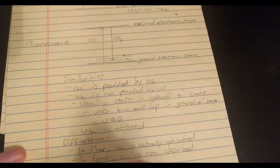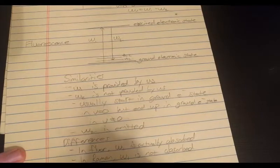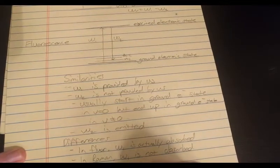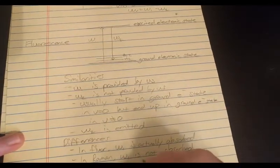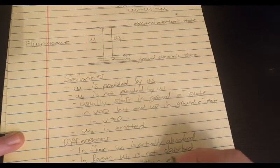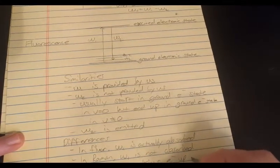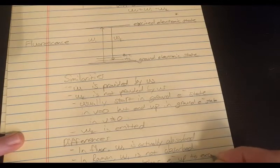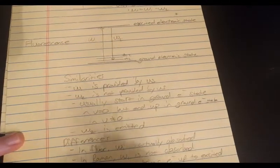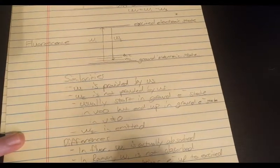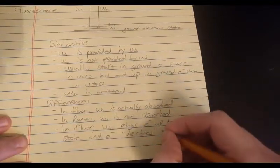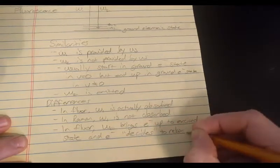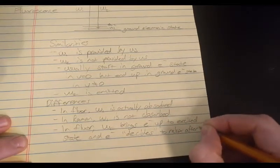And so, like I said earlier, in fluorescence, omega two brings, no, omega one brings an electron up to the excited state. And then that electron decides, sort of, decides to come back down or to relax after order of time nanoseconds.